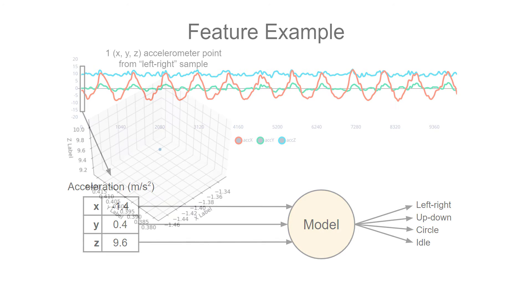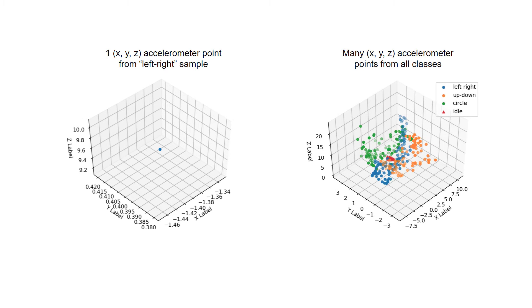The nice thing about three dimensions is that we can plot that point pretty easily and visualize what's going on. Now, let's plot similar points taken from different samples from each of our four classes. I've made each of the classes a different color.